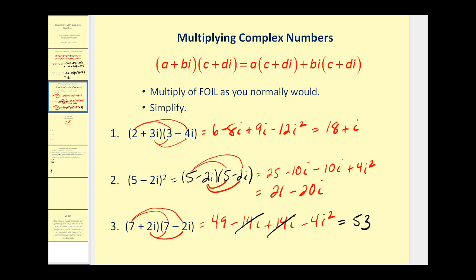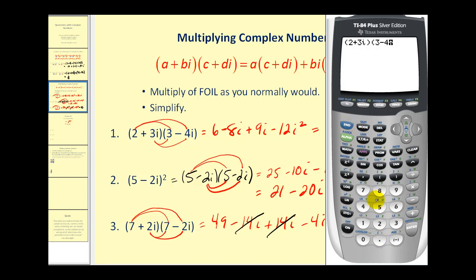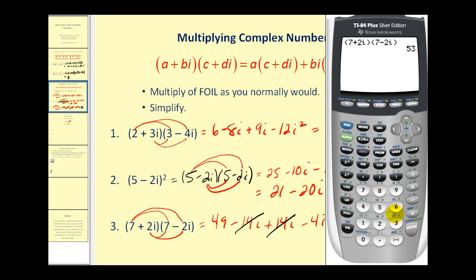Let's go ahead and check these on the graphing calculator. Press the mode key, scroll down, and make sure you have a plus bi selected so the calculator will recognize complex numbers. Go back to the home screen and we'll check one, two, and three. For number one, two plus three i — i is located by pressing second decimal — and eighteen plus i is what we had. Let's check number two: the quantity five minus two i squared, and that checks. And the last one we had fifty-three: seven plus two i times seven minus two i, and that checks as well.